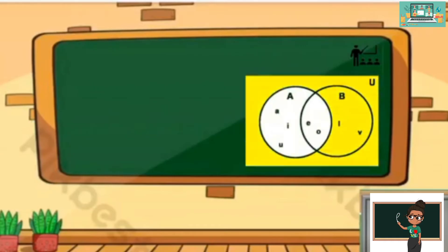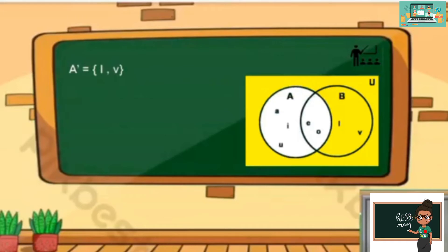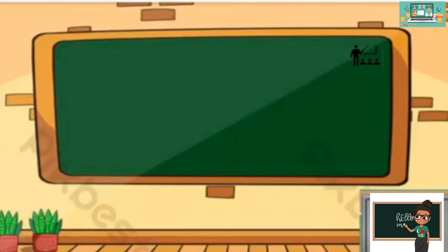How about the shaded region? That is A prime. A prime consists of only L and B as its elements. The cardinality of A prime is equal to 2. A prime means all elements that are not included in set A.